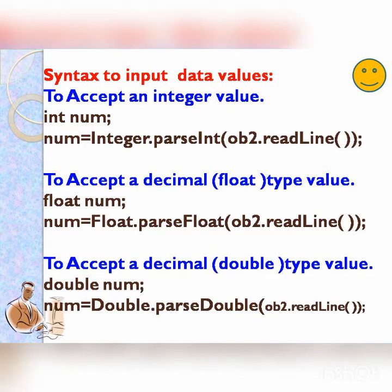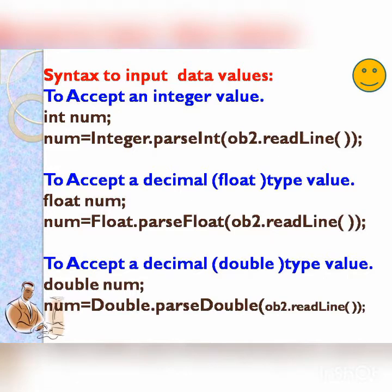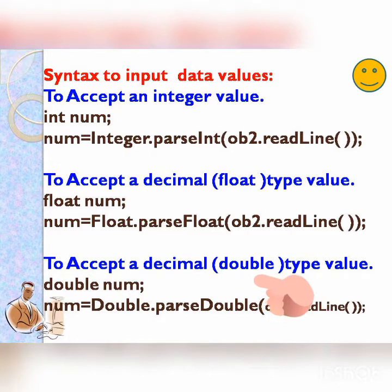Then we will discuss the syntax of input data values. How to accept an integer value using InputStreamReader — the syntax is: int num; num = Integer.parseInt(obj2.readLine()). Then to accept a decimal type value, that is float type, declare the variable as float num; num = Float.parseFloat(obj2.readLine()). This obj2 is the object of the BufferedReader class.